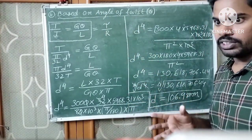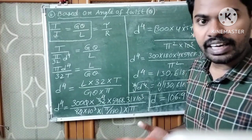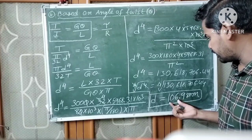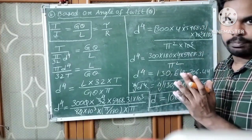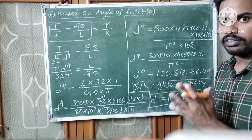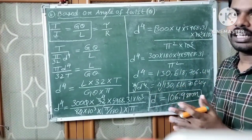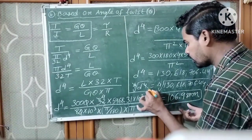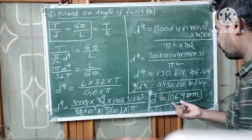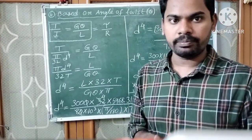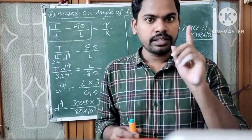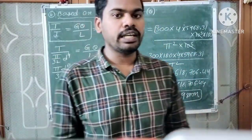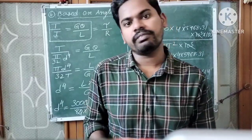Based on shear stress, we got d equals 79.72 mm. Based on angle of twist, we got d equals 106.9 mm. For safety, to avoid failure of the solid shaft, we consider the maximum of the two values. Therefore, the suitable diameter of the solid shaft is 106.9 mm.